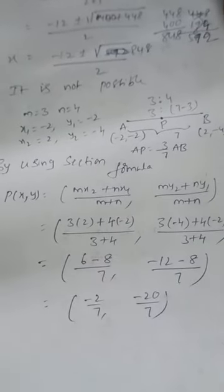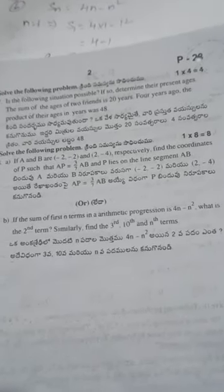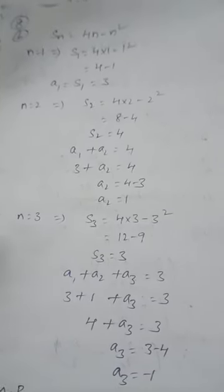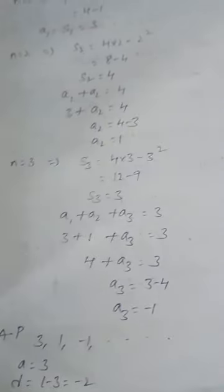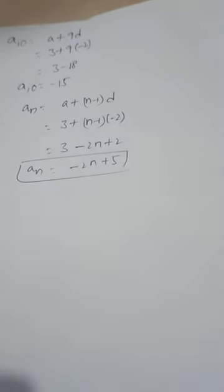If the sum of the first n terms of an arithmetic progression is 4n − n², find the second term, third term, 10th term, and nth term. First term = 3, second term = 4, third term = 3. The 10th term is −15 and the nth term is −2n + 5. Thank you for watching, please subscribe.